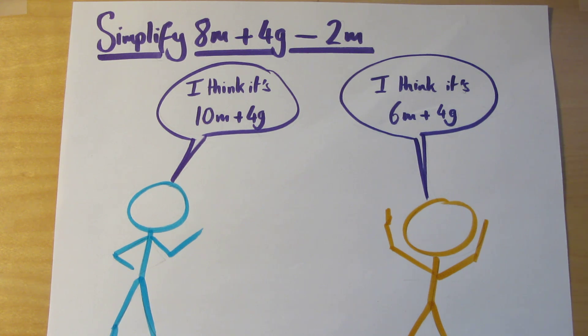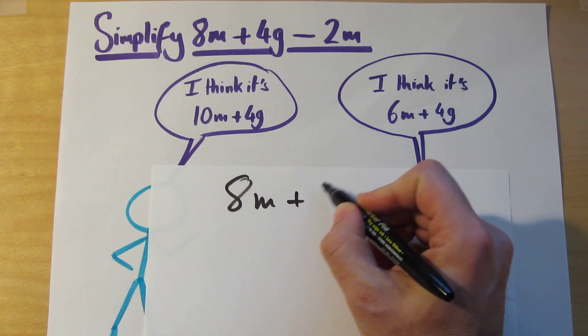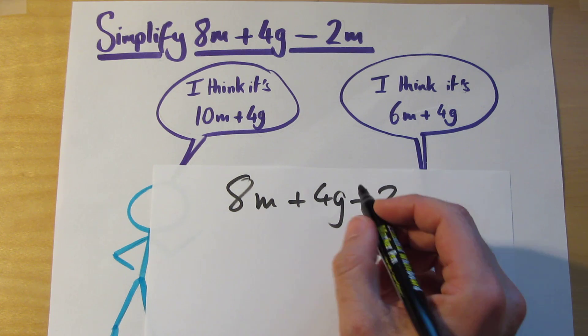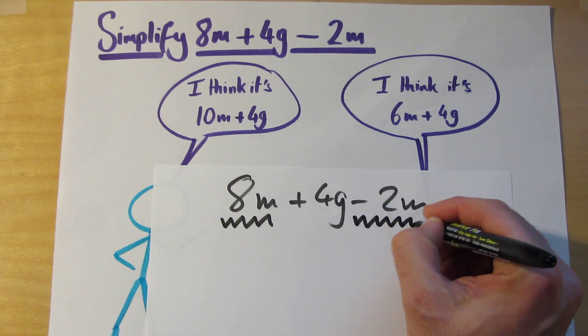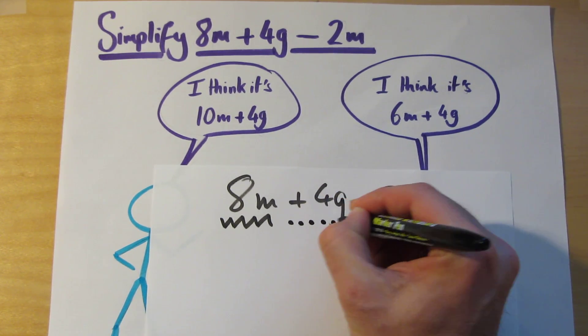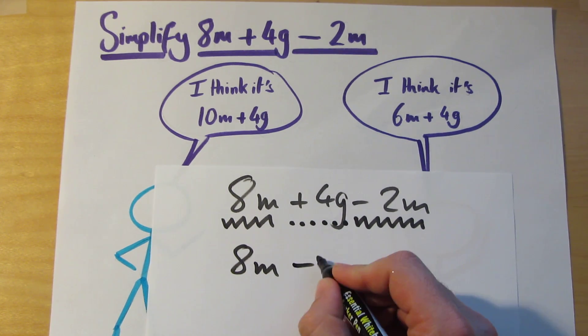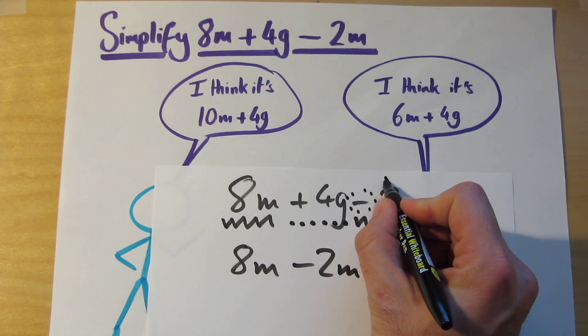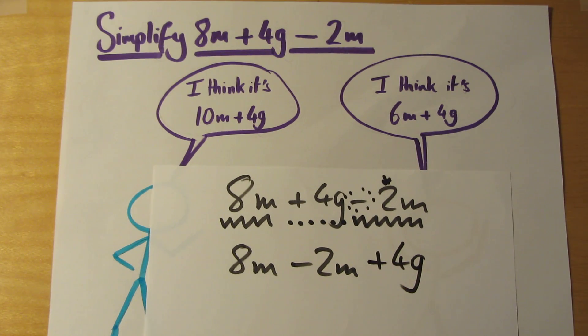Okay. We're back again. Let's go through the workings. So 8m plus 4g take away 2m. If you remember towards the beginning of this video, I said that what you need to do is to collect the like terms. So we've got m's and we've got g's. The m's are going to go together. So I'm going to rewrite this out as 8m take away 2m. Look, that sign here goes with this guy. So 8m take away 2m plus 4g. Simplify that.